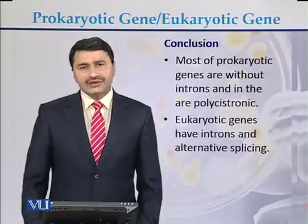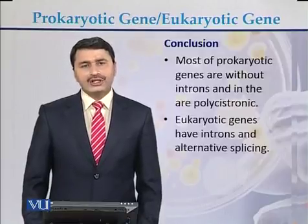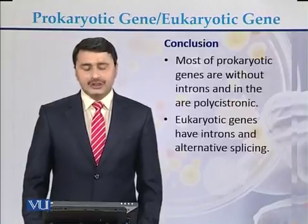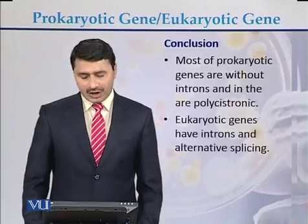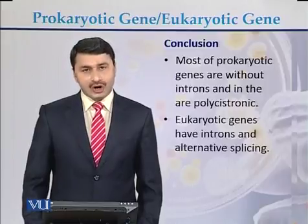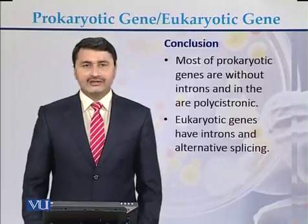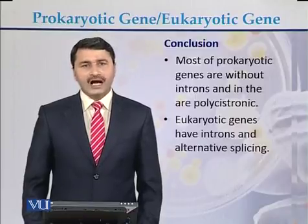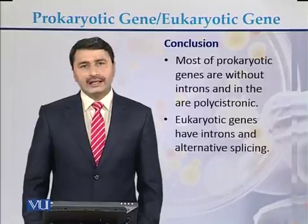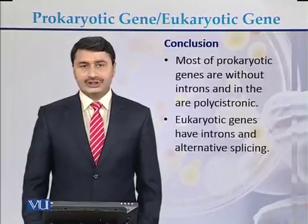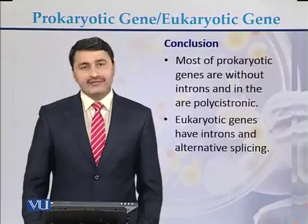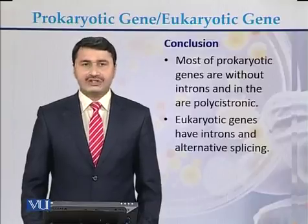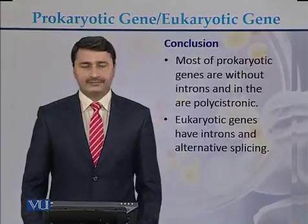The difference between prokaryotic and eukaryotic genes: most prokaryotic genes are without introns and are in the form of polycistrons, while eukaryotic genes have introns and also show the phenomenon of alternative splicing.